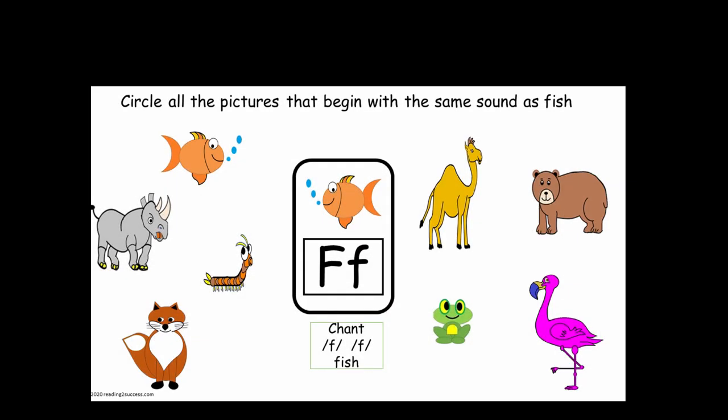In this activity, kids will circle all the pictures that begin with the same sound as fish. Remind kids that fish begins with the F sound, and then say each picture with them: C, C, Camel. B, B, Bear. F, F, Frog. F, F, Flamingo. F, F, Fox. B, B, Bug. R, R, Rhino. F, F, Fish.